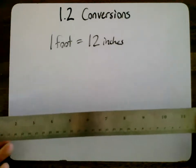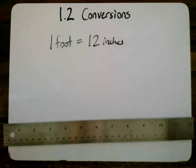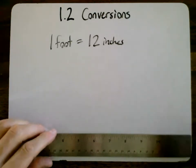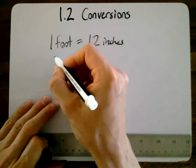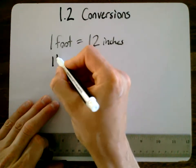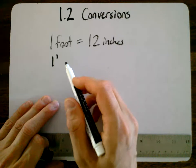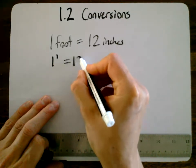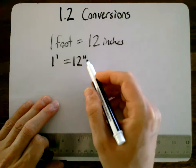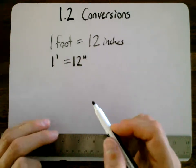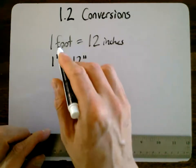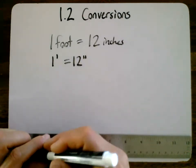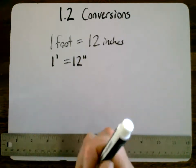So it's also important to know that sometimes you're going to see this: one foot, a single apostrophe mark, means feet, and then 12 inches, two, like double quotes, means inches. Okay, it's just so you don't have to write out the words. It's an abbreviated way of doing that.